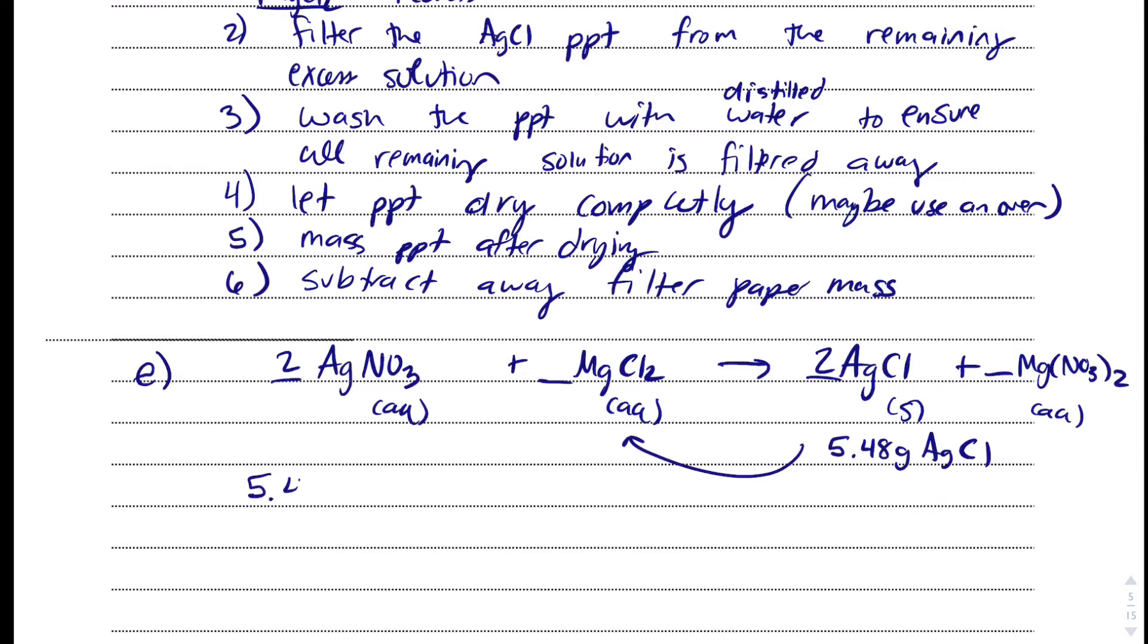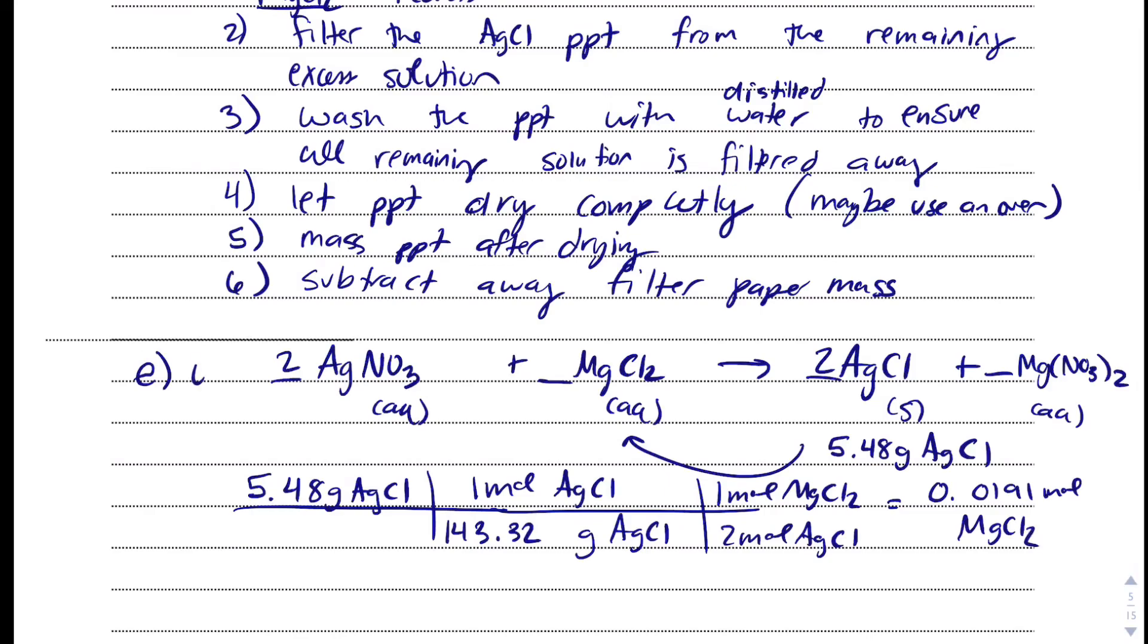5.48 grams of silver chloride. We'll get the molar mass of silver chloride for every 1 mole of silver chloride. And then, there's 2 moles of AgCl for every 1 mole of MgCl2. And that molar mass is 143.32 grams per mole. And so, we get 0.0191 moles of MgCl2. And that's E part 1. We have a part 2, so that means that they're related.